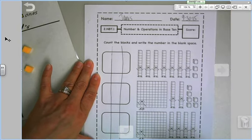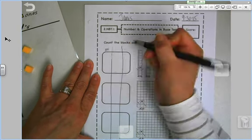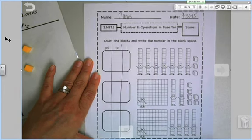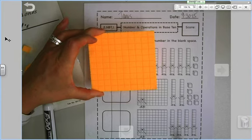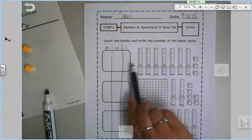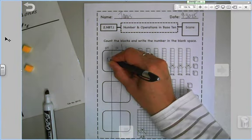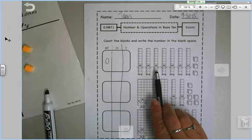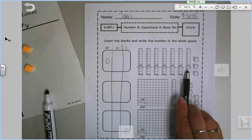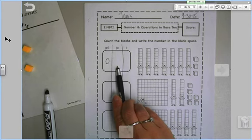I'm going to put hundreds, tens, ones. We remember what hundreds looks like. These are hundreds flats. Do I have any in this picture here? There are none, so I'm going to put a zero. How many tens are there? Well I want you to count the tens rods and write how many rods you counted and put it here. Go for it.